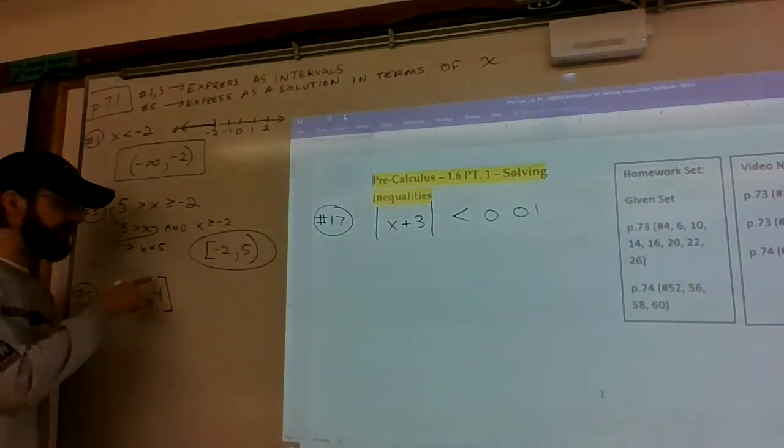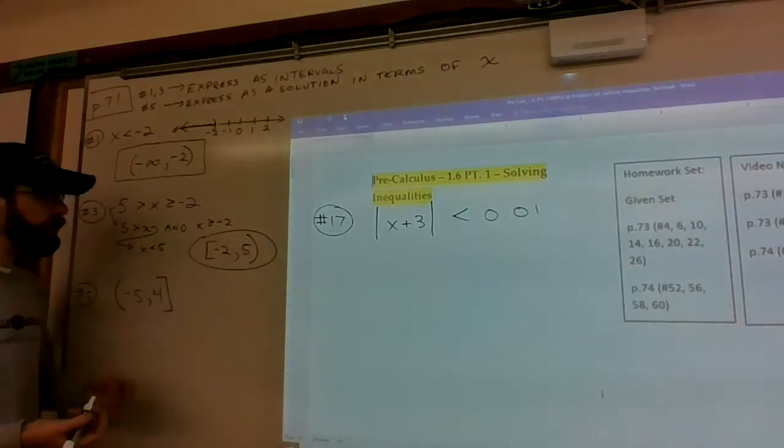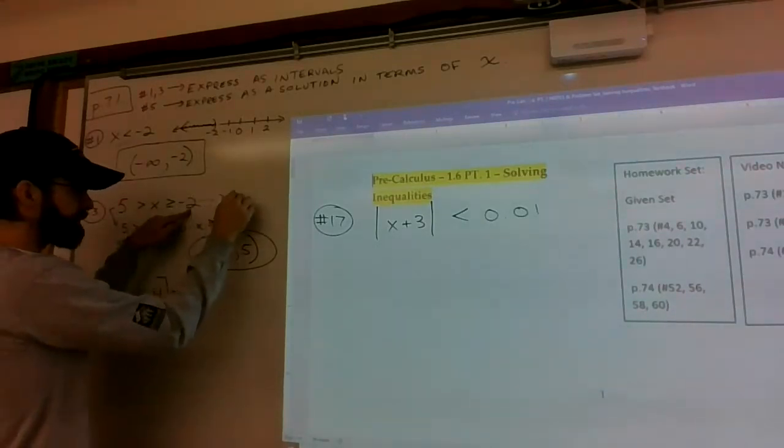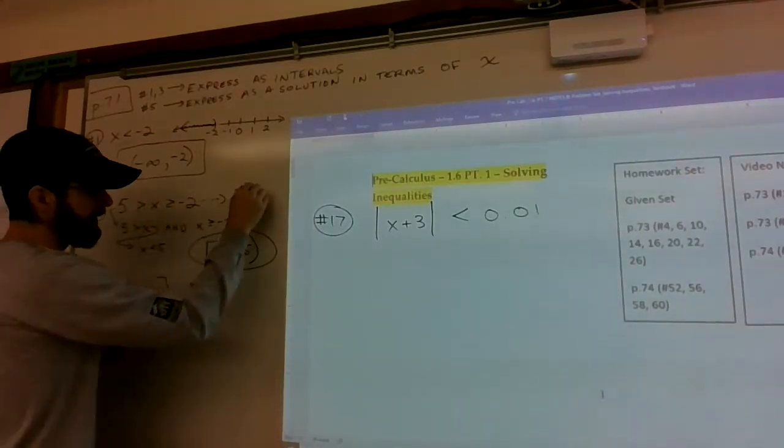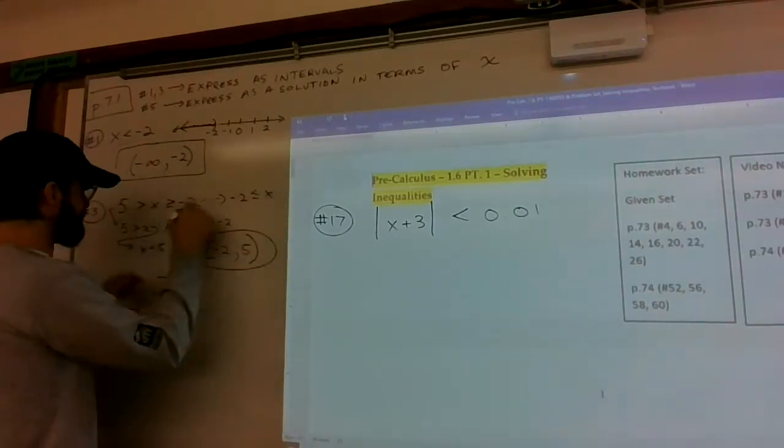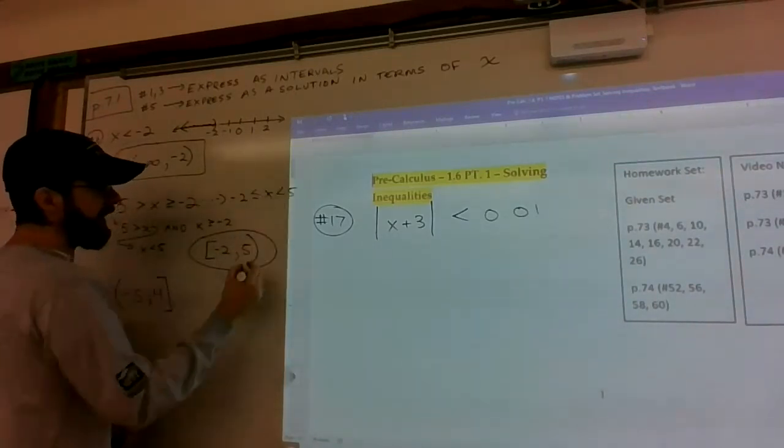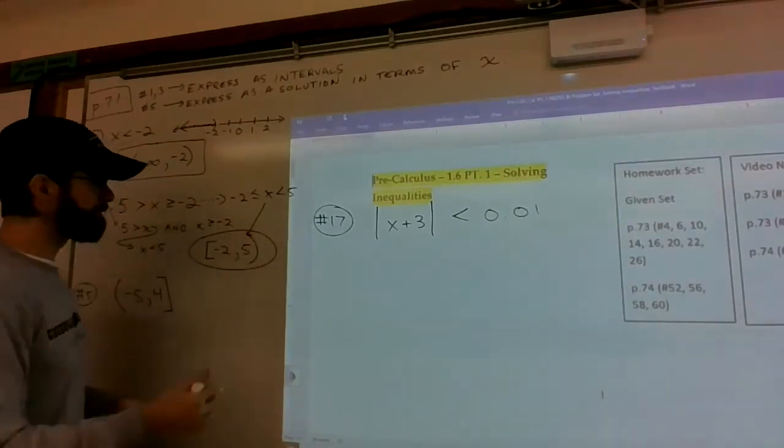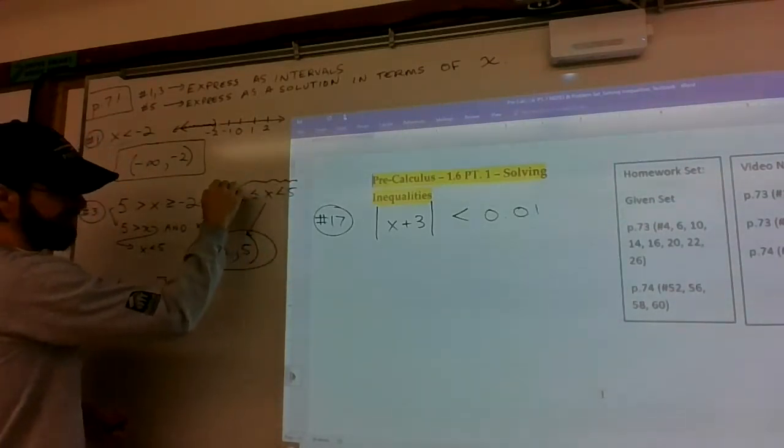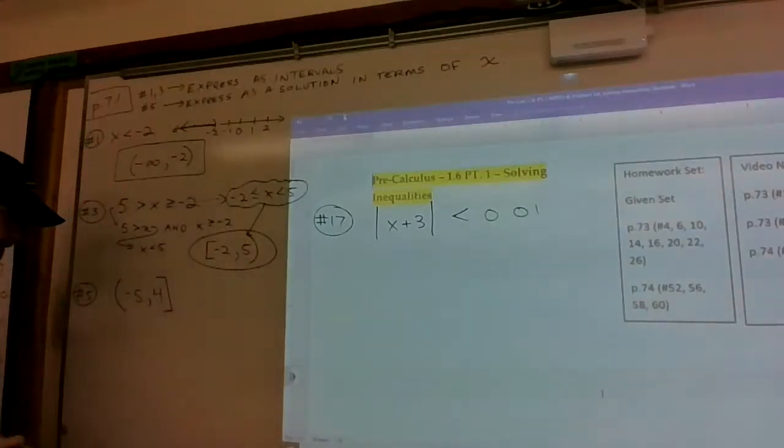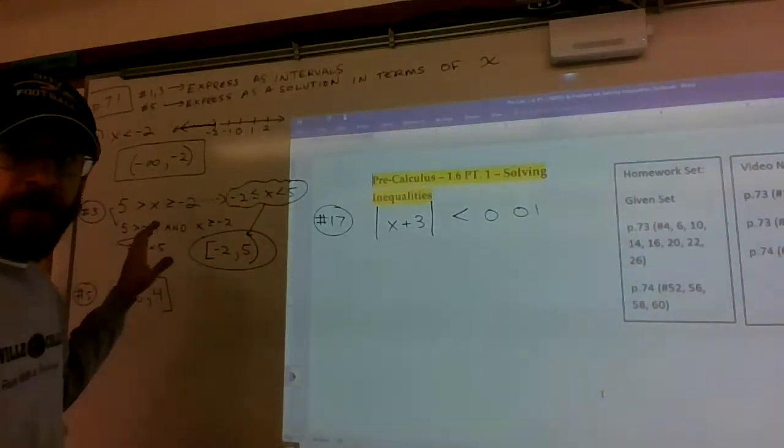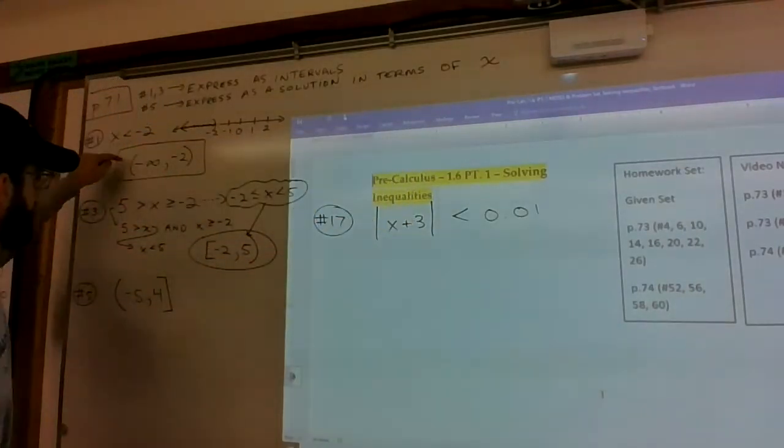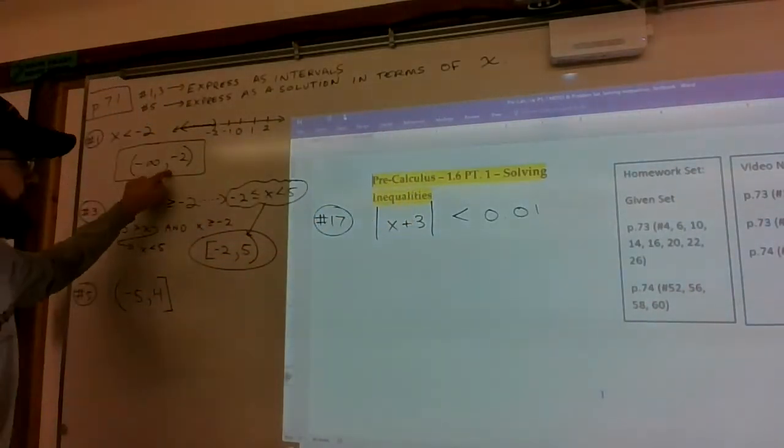You didn't have to split this apart. You literally could have thought of it as negative 2 is less than or equal to x, which is less than 5. I think that's the way most students can come up with this interval when they visualize it like this first. So that's how you go from a solution in terms of x to intervals.